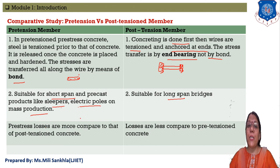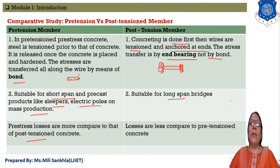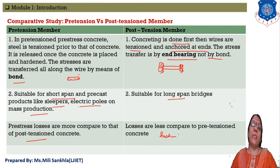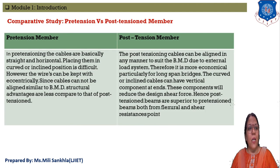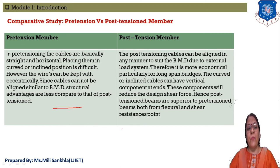Pre-tensioning is subject to higher losses compared to post-tensioning because of creep and shrinkage effects over time. The maximum failure mode in pre-tensioning is creep and shrinkage. In post-tensioning, losses are less — the maximum loss in post-tensioning is due to friction, which we will discuss in detail in chapter two. Remember: losses in pre-tensioning are higher than in post-tensioning.